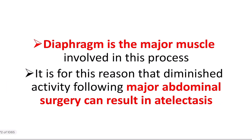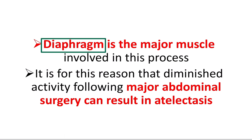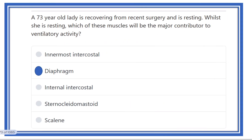The diaphragm is the major muscle involved in respiration. It is for this reason that diminished diaphragmatic activity following major abdominal surgery can result in atelectasis — the collapse of a lobe of the lung. When the diaphragm has little or no movement, this condition of lung collapse, known as atelectasis, may develop.